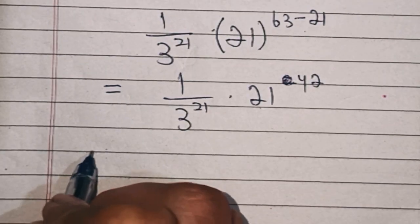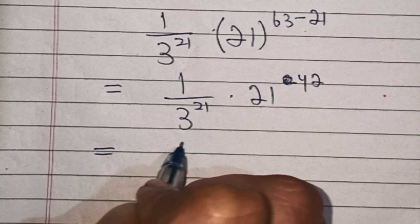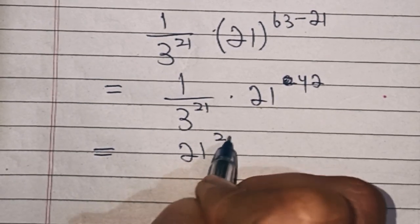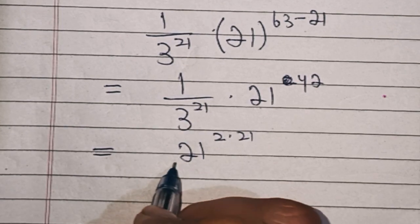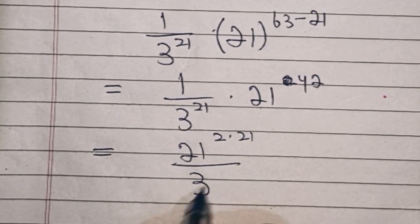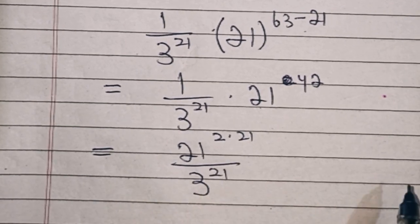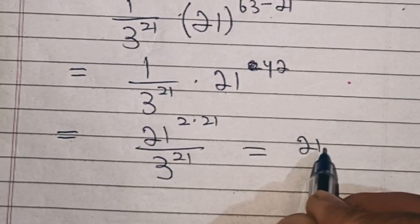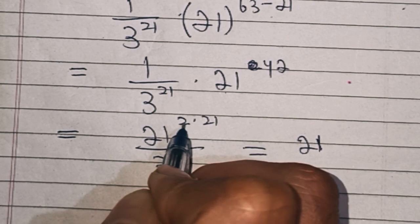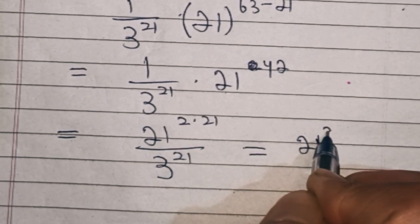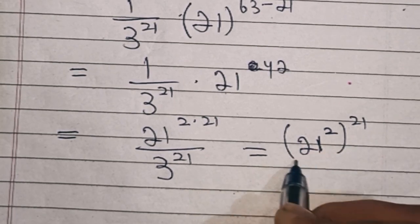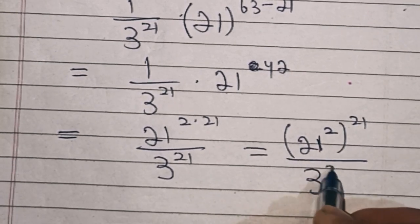Now in the next step this is equal to, 21 power, this 42 is same as 2 times 21 over 3 power 21, which is equal to 21, let's take this 2 inside bracket, that is 21 square then bracket 21 over 3 power 21.